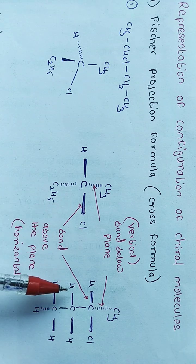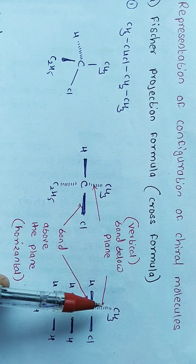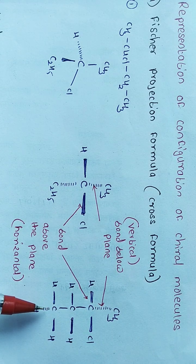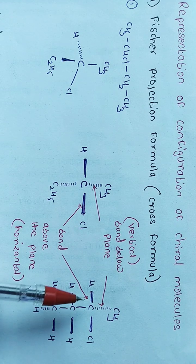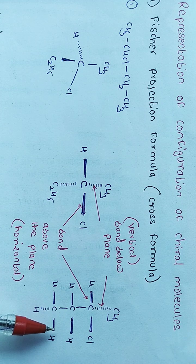It is represented like this. All carbon atoms present in 2-chlorobutane are represented by vertical lines and remaining bonds are represented as horizontal lines.